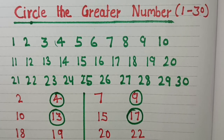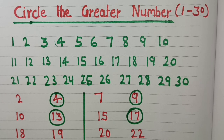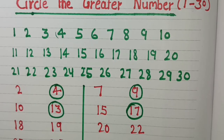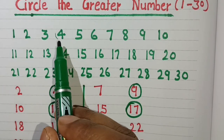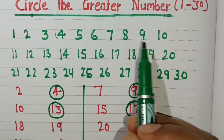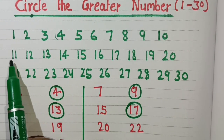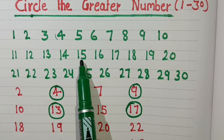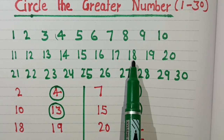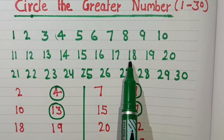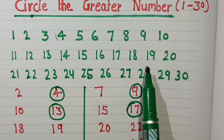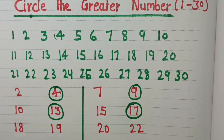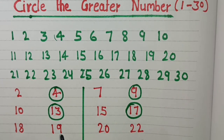Next numbers are 18 and 19. Let's do counting: 1, 2, 3, 4, 5, 6, 7, 8, 9, 10, 11, 12, 13, 14, 15, 16, 17, 18, 19. So 19 is the greater number. We will circle number 19.